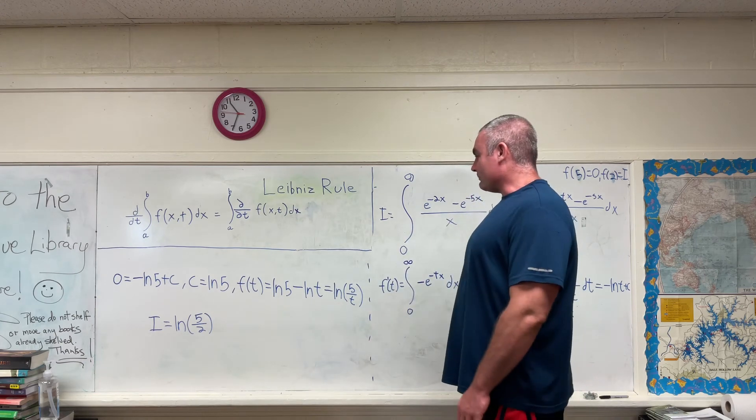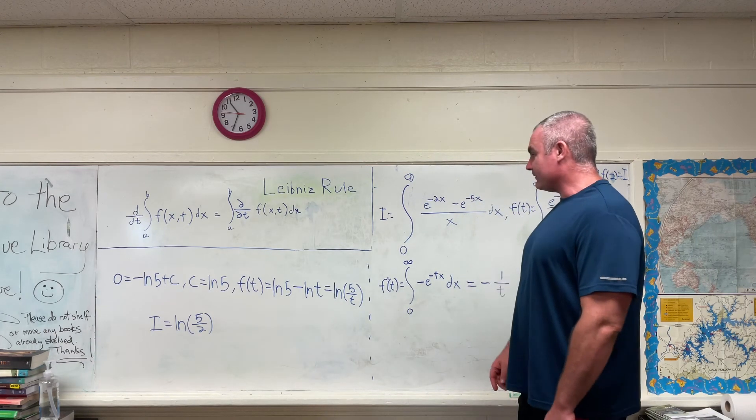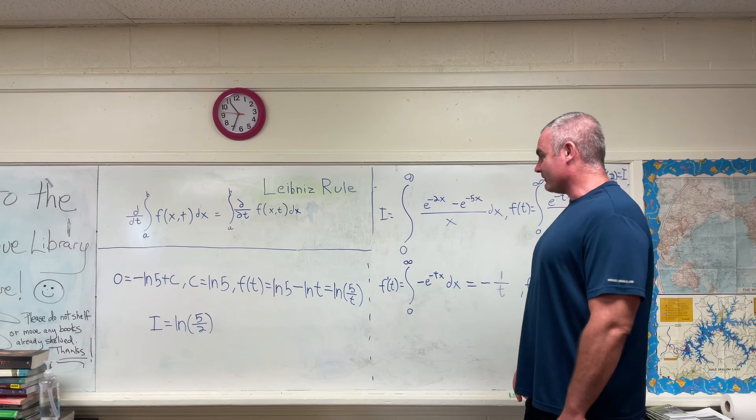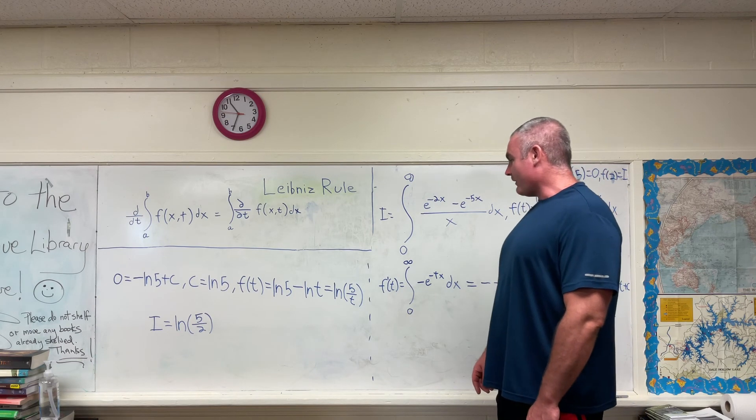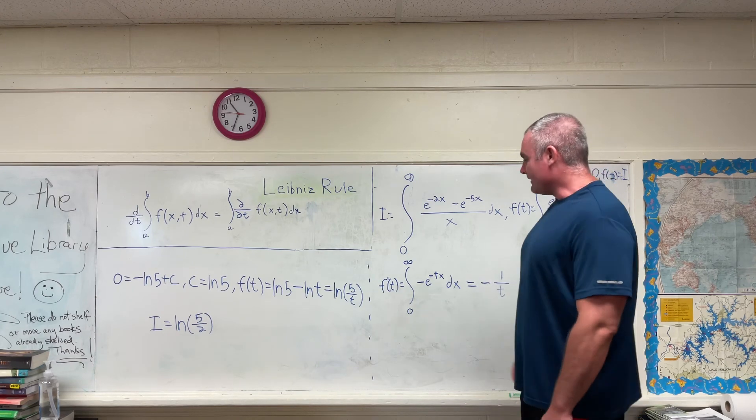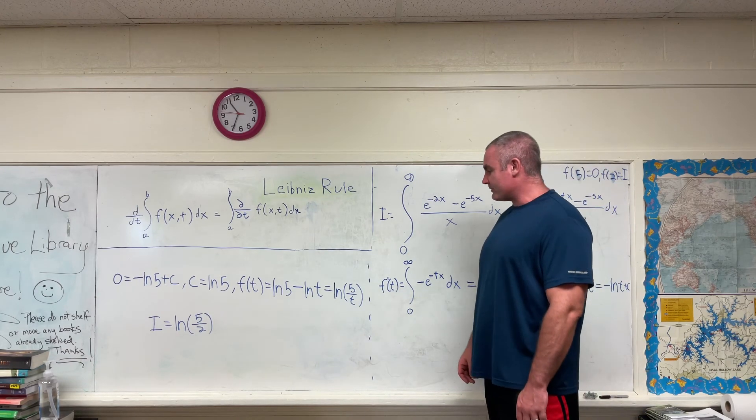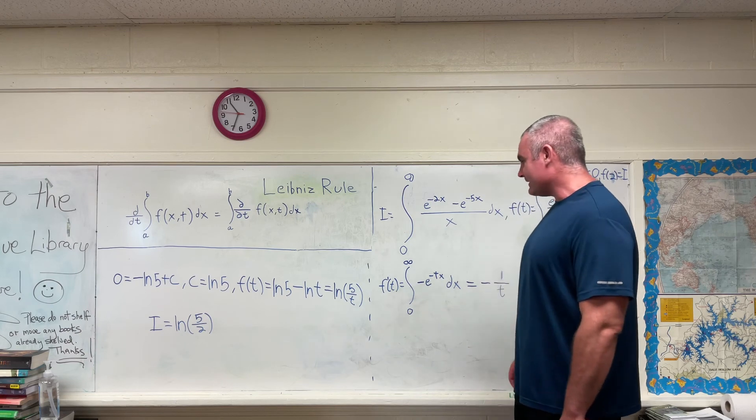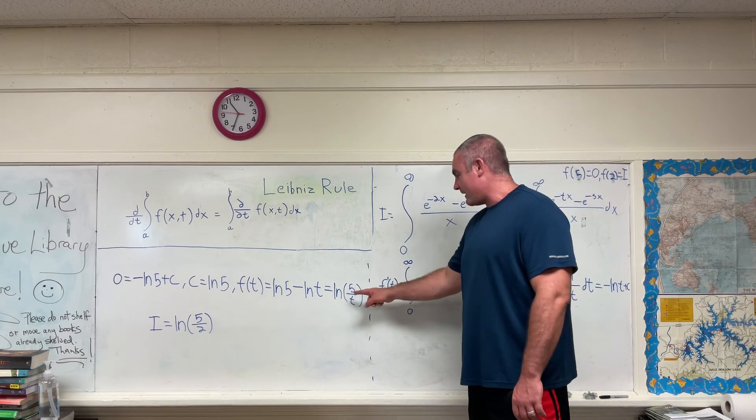So, now we can completely figure out what f of t is based on our constant of integration. It's going to be natural log 5 minus natural log t. I hope you can see where that comes from. And then, using properties of logarithms, we have that f of t is equal to the natural log of 5 over t.